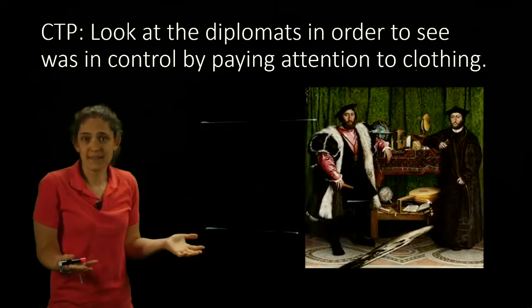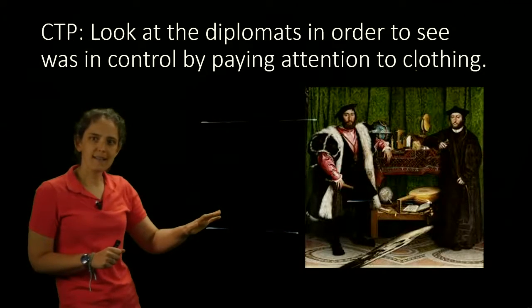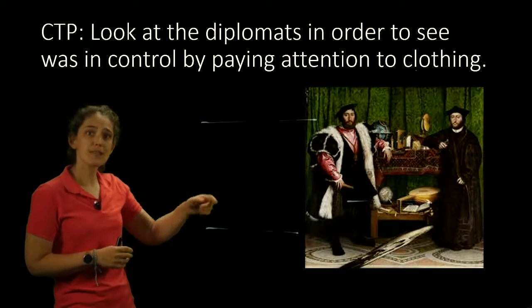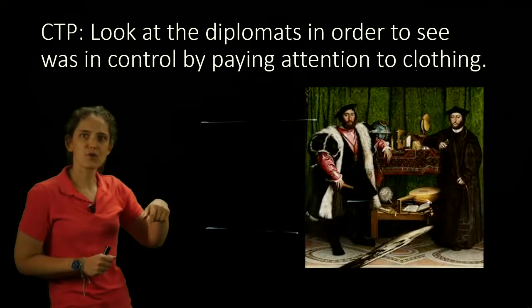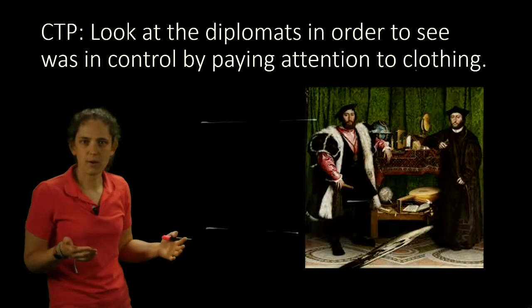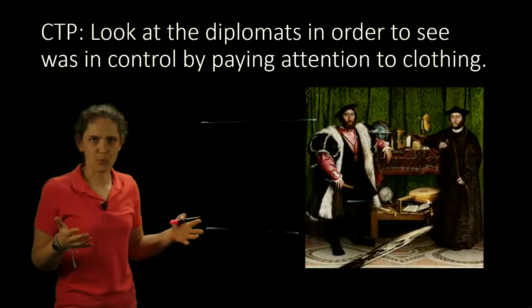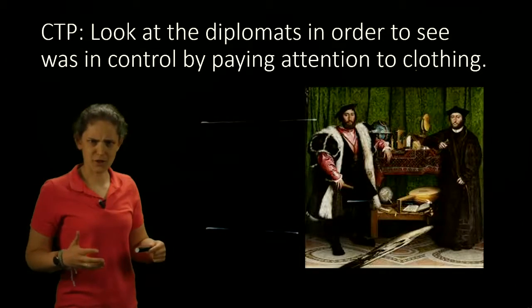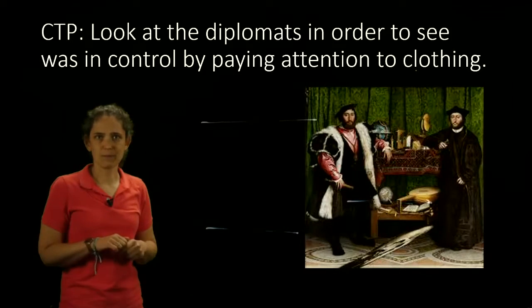It's really important that we tell them exactly why they're looking at it right now. That doesn't mean we don't sometimes let them just look, but if we're using it in a particular way in the lesson, we want them to know how to look at paintings for different purposes. So we'll tell them: right now, look at it in order to see who was in control, by paying attention to clothing. What do you notice about what people are wearing? What does that tell you about who they are? Who seems to have more presence or stature, and what are they wearing versus the person in the background?